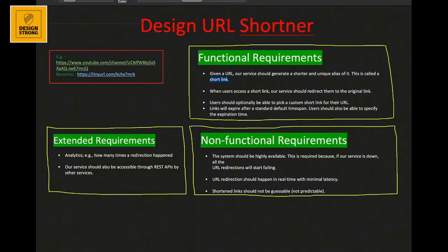There are also extended requirements that can be discussed between the interviewer and interviewee. One is analytics — for example, by appending a plus sign to the short URL, logged-in users can see how many times the link has been clicked or redirected. Second, we should be able to expose APIs for our URL shortener system.